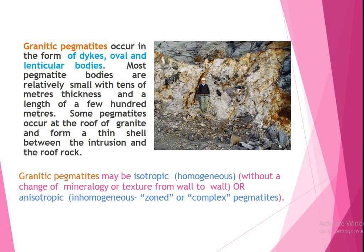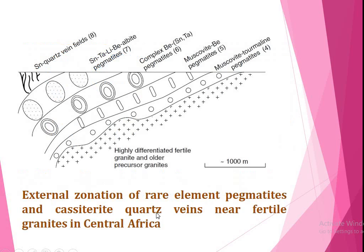Granitic pegmatites may be isotropic or anisotropic, homogenous or zoned, or complex pegmatites. Here, this is the external zonation of rare earth pegmatites and cassiterite quad zone near fertile granite in central Asia.